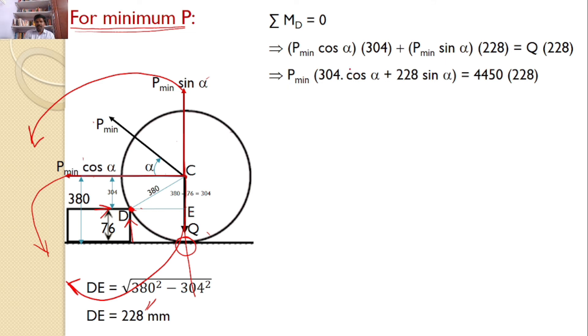Now this I can simplify. P minimum I can take outside. Then I will get 304 cos alpha plus 228 sin alpha is equal to 4450 into 228. So from that I can find P minimum is equal to 1014600 divided by 304 cos alpha plus 228 sin alpha.